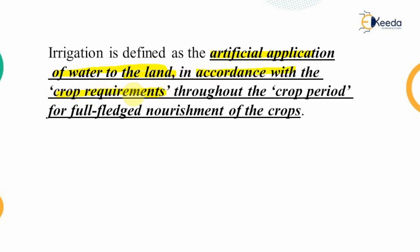Different crops may require different amounts of water, so we ensure water supply keeping in mind the different requirements of the crop throughout the crop period — that means the duration within which the crop will be completely grown and harvested — ensuring a regular supply of water for the full-fledged nourishment of the crops.